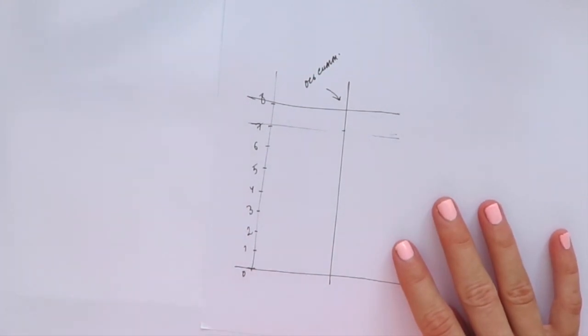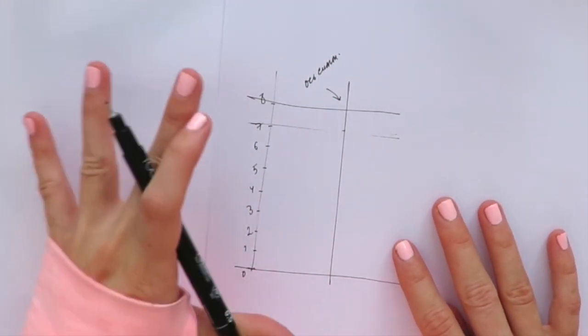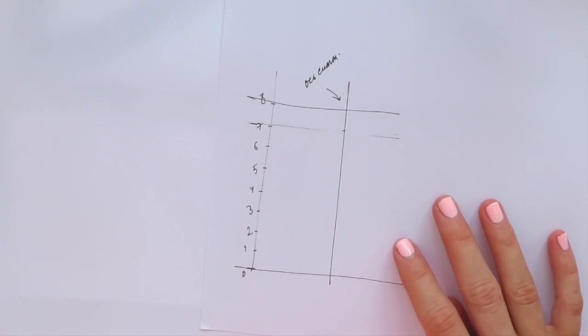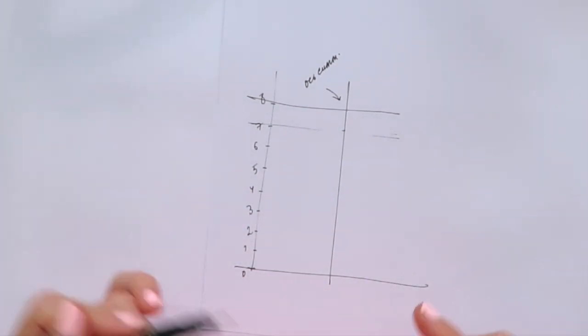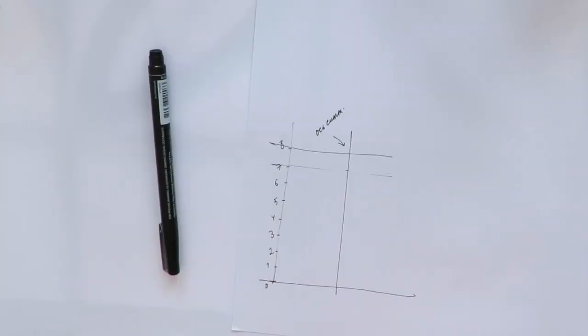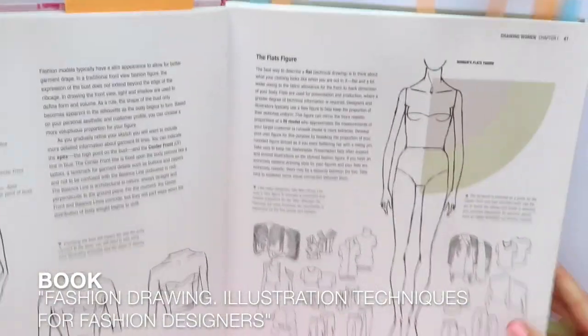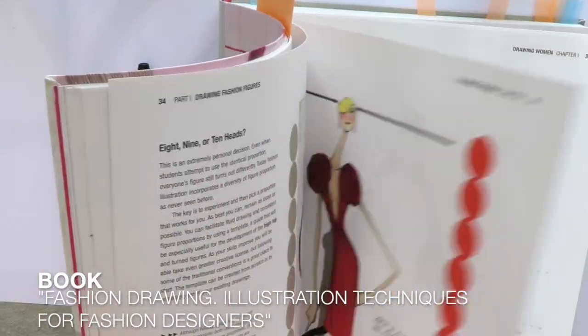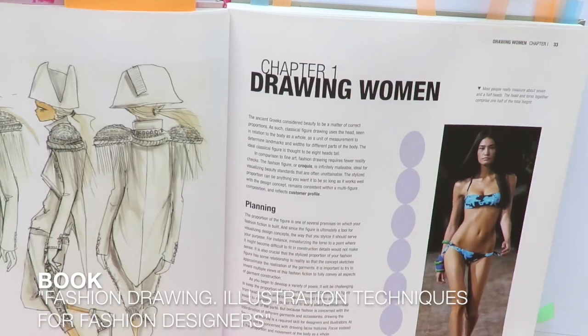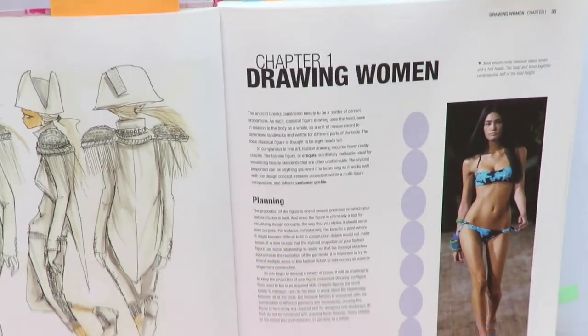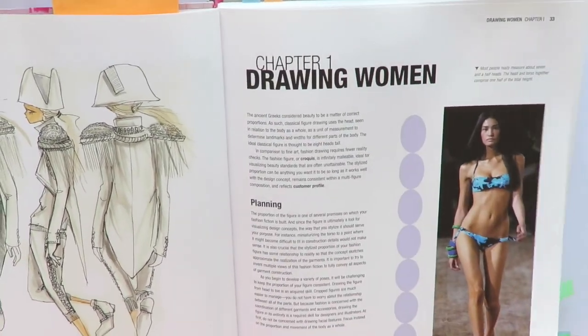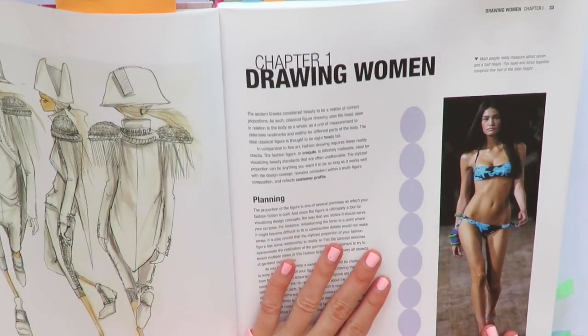A normal average woman has usually seven times her head in her entire body. High fashion models might have up to seven and a half or eight heads. I want to show you something from this book on fashion drawing - it's full of beautiful illustrations.